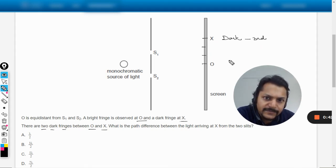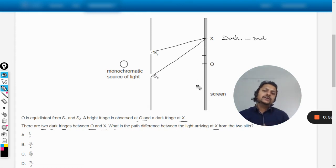What is the path difference between the light arriving at X from the two slits? So you are supposed to find the path difference here between these two points. How are we going to do this?